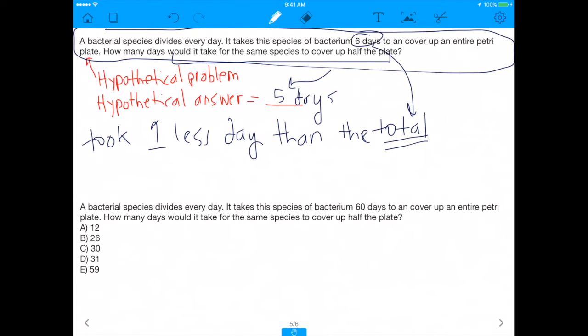And so what you'll see is, basically the pattern you should have noticed is that it took one less day than the total. So remember, it tells us it takes a total of 6 days to cover up the whole plate. And so to cover up half the plate, it takes one less day than the total. So if we want to apply this to our problem, the total is 60 days, right? And therefore, our answer should be one less than 60, and that's 59.